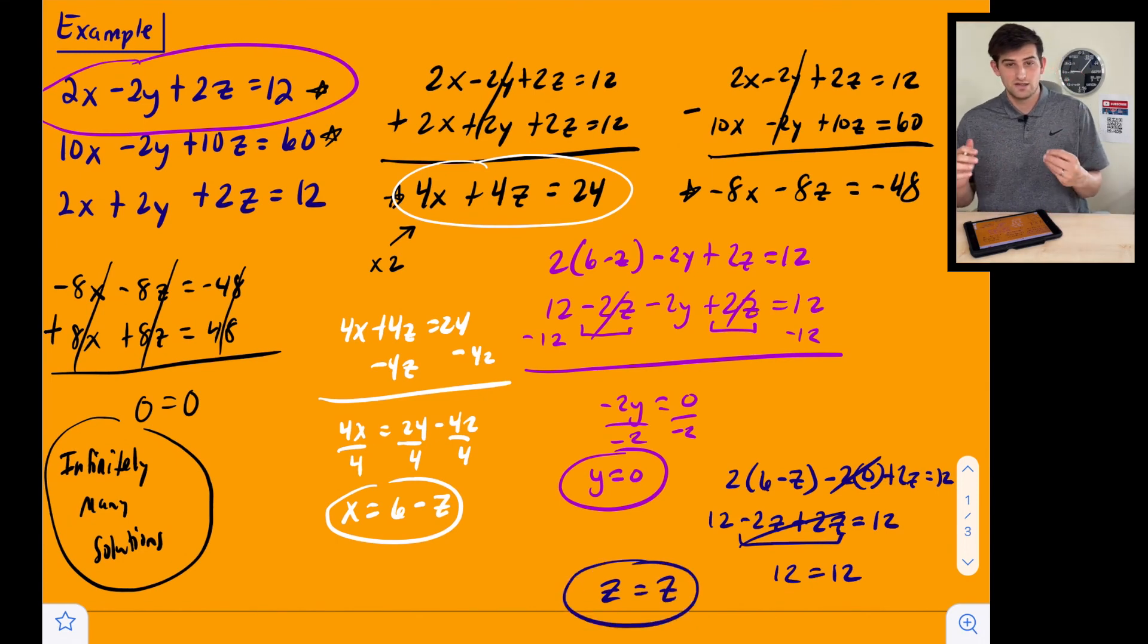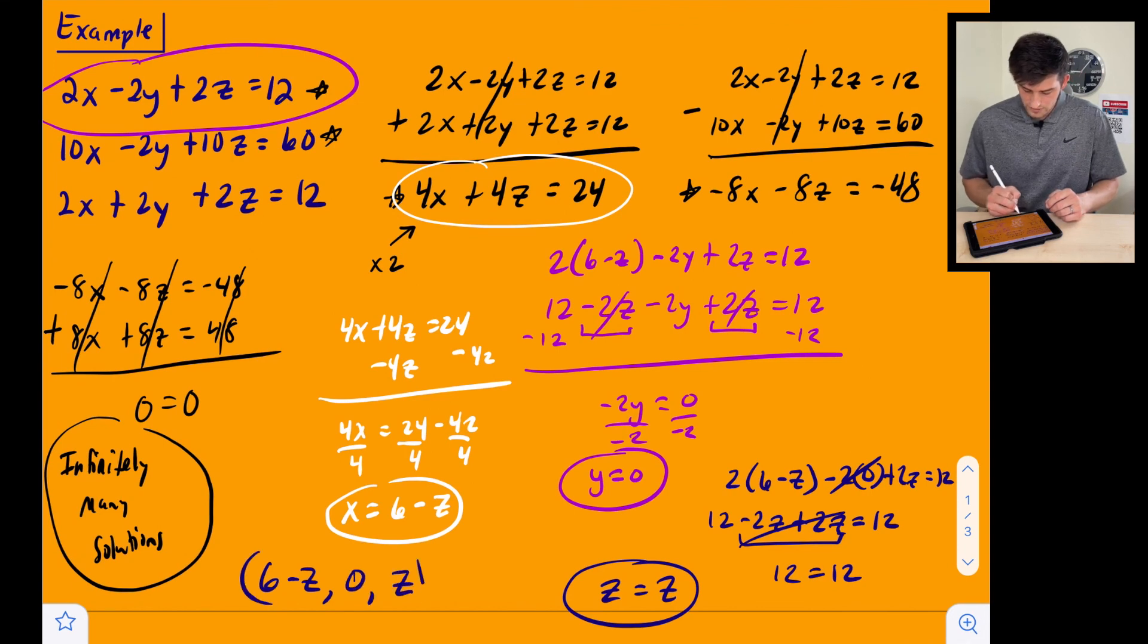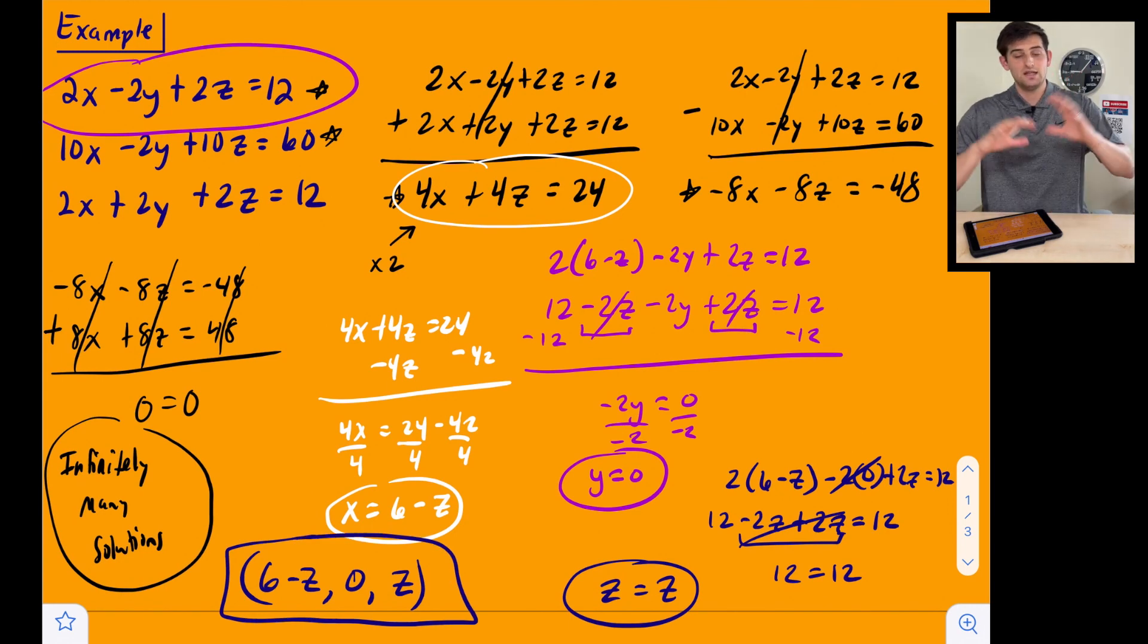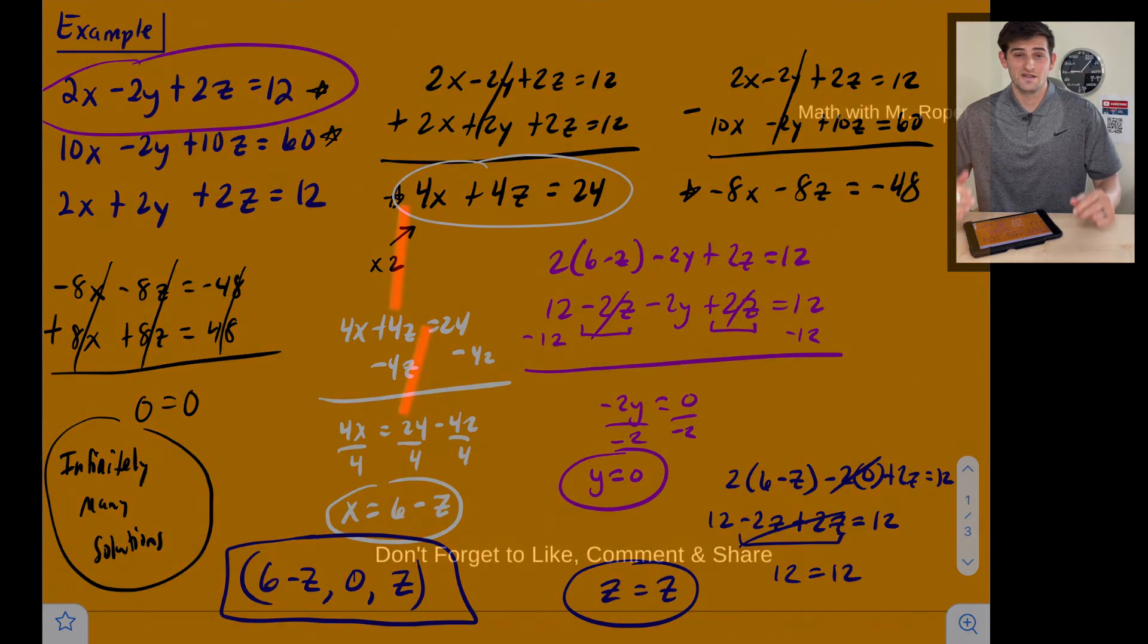So now how can we write this as a coordinate triple? Well, we have what we have for our answers. So x would be 6 minus z, y is 0, and z is just z. So it is infinitely many solutions, but we could write the solution as anything that fits this pattern. 6 minus z, y has to be 0, and then z can be anything we want. All right. And that's how you solve a three variable system of linear equations when there are infinitely many solutions.